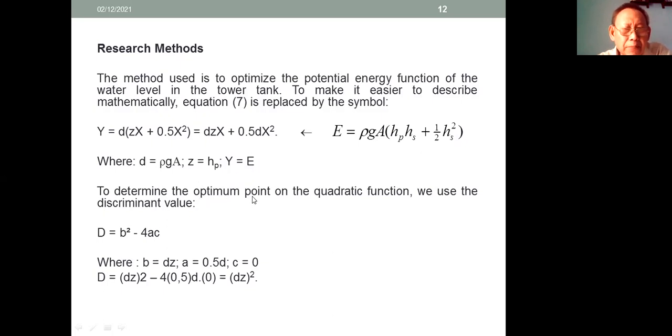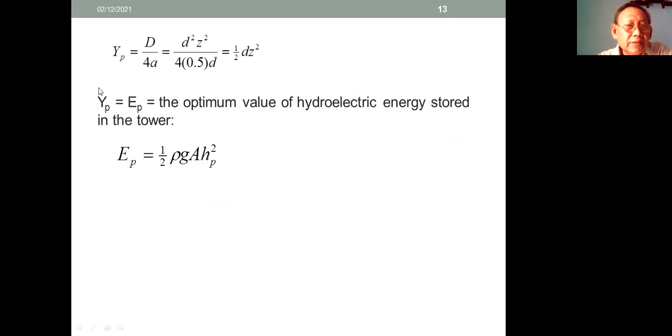To determine the optimum point on the quadratic function, we use the discriminant value. D = B² - 4AC, where B = DC, A = 1/2 D, and C = 0. So that D = (DC)².